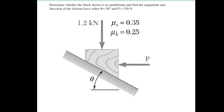Here's an example where we can take one of those problems and plug in some numbers. We have a block that has two forces: 1.2 kilonewtons acting straight down and P equals 150 newtons pushing it to the left. They also give us an angle — this is happening at 30 degrees.